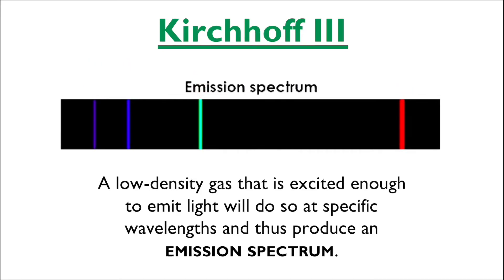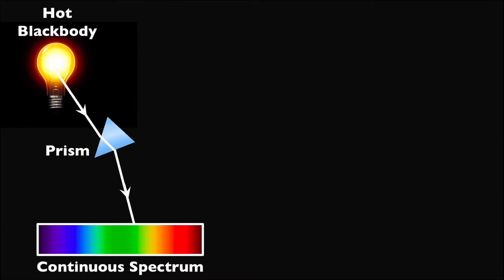Let's take a look at the creation of each of these spectra from a light bulb. When a hot black body, like a light bulb, emits light, and we look at that light directly through a prism, we can see all the wavelengths of light emitted. This is a continuous spectrum, of course.